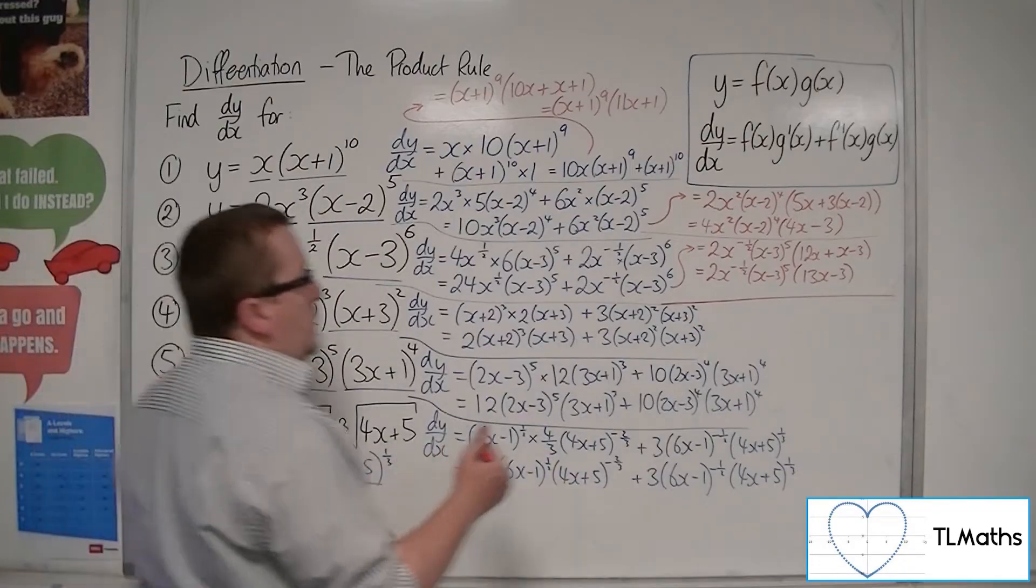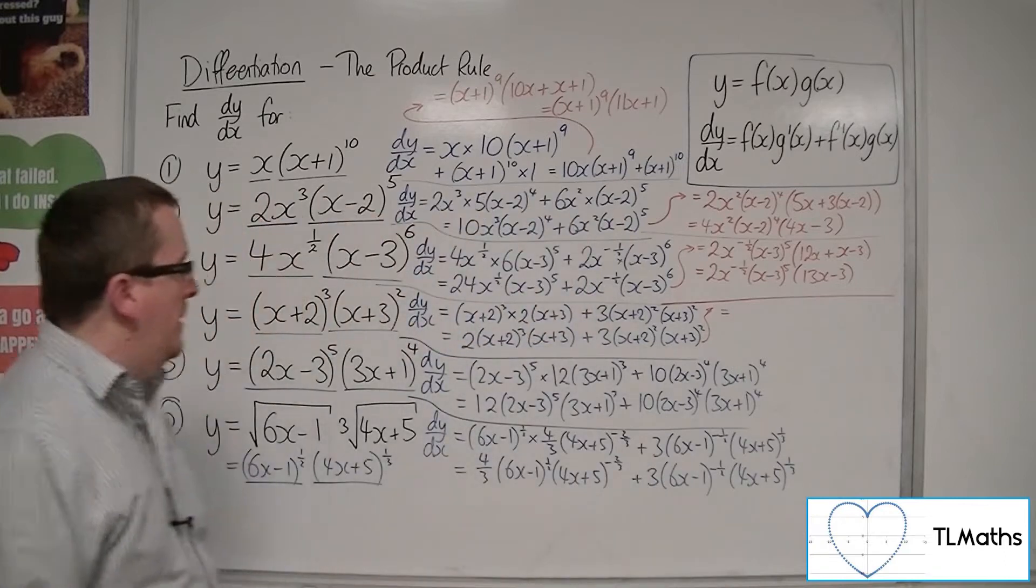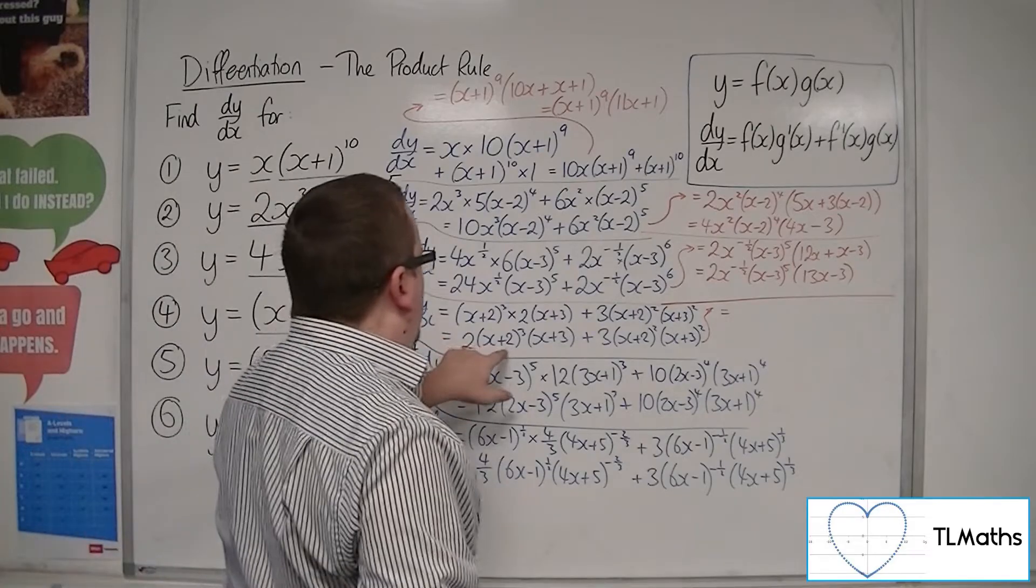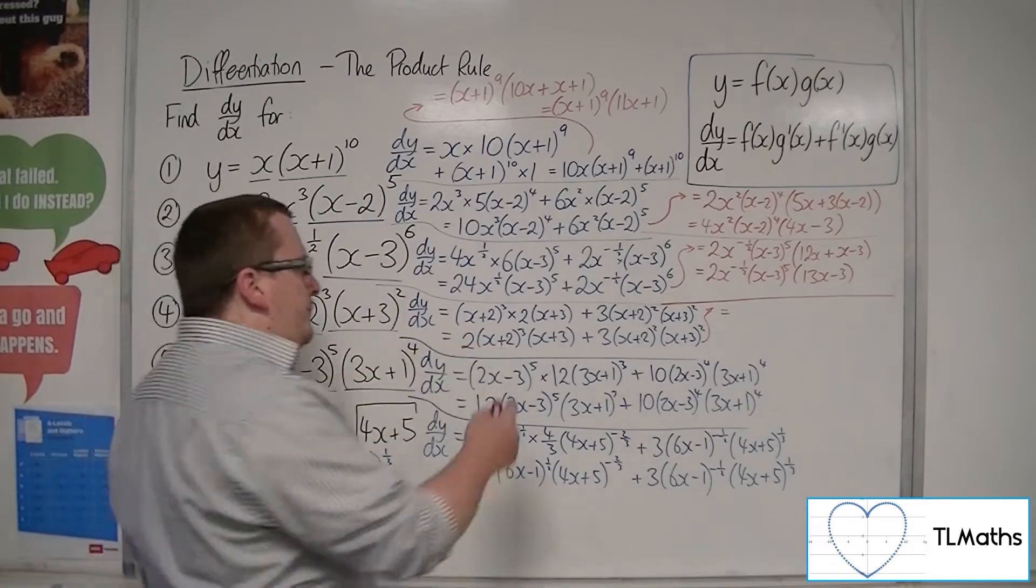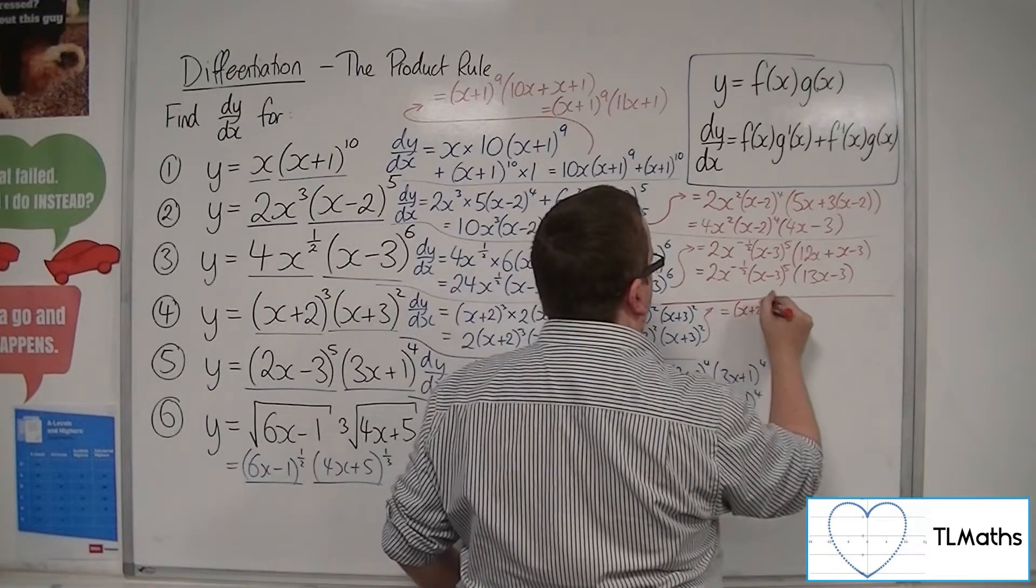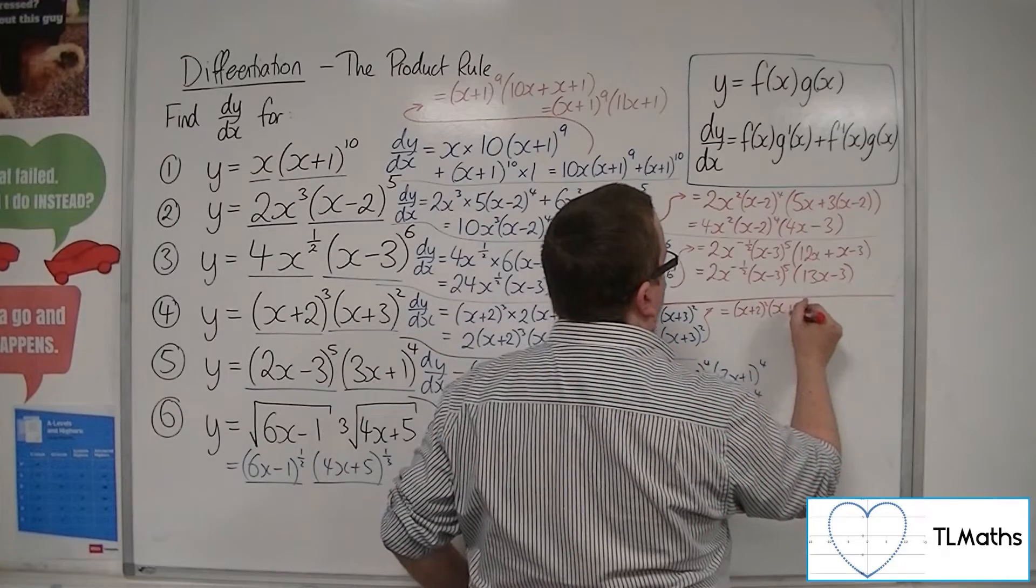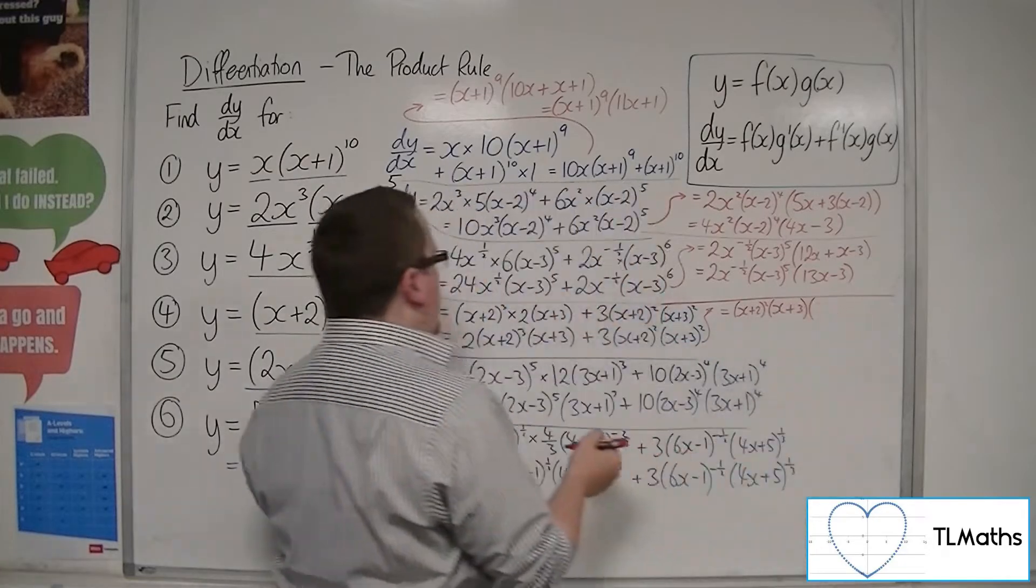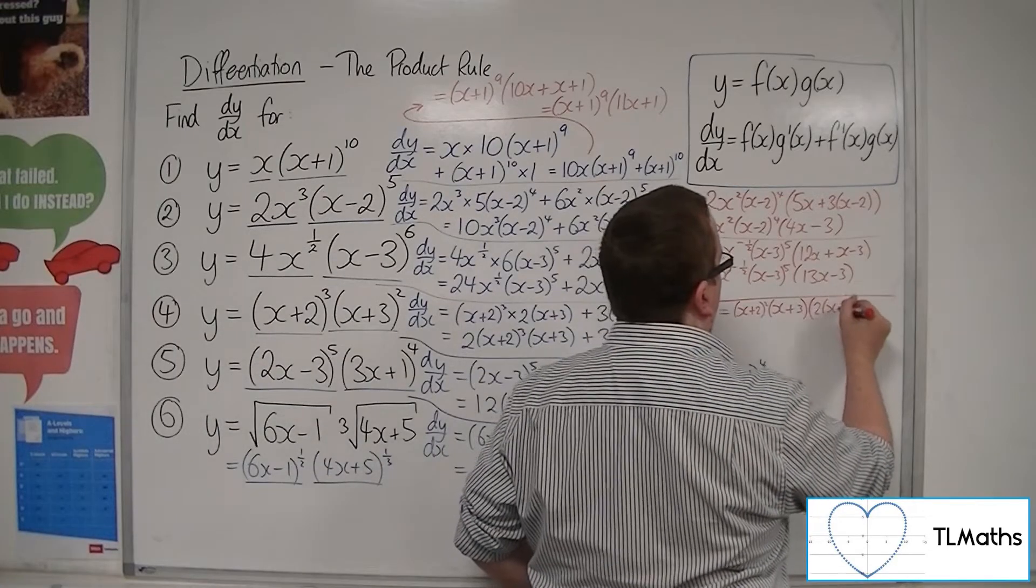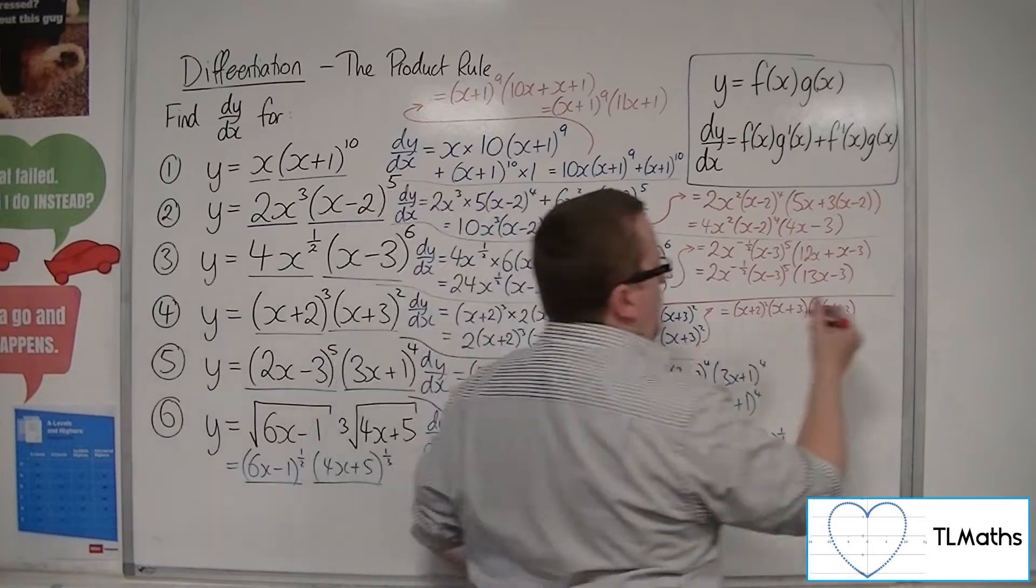Let's have a look at number 4. I'm going to start running out of space if I'm not careful, so I'll have to write it a little bit smaller. Well, we've got 2 and the 3 don't have any common factors, apart from 1. But I can pull out the (x+2)² there, and I can pull out an (x+3) from there, leaving me with 2 lots of (x+2).